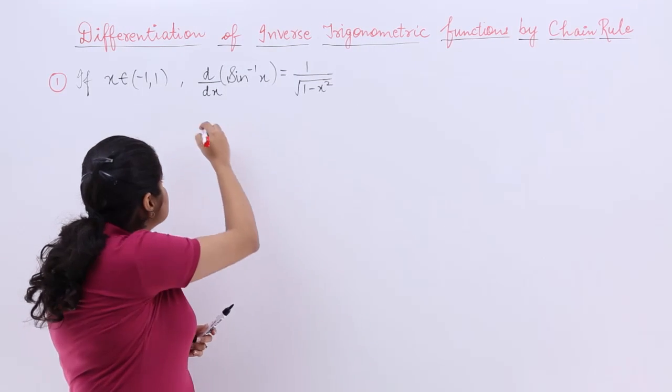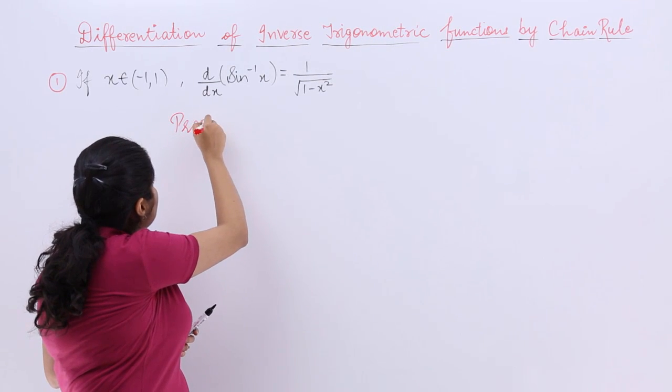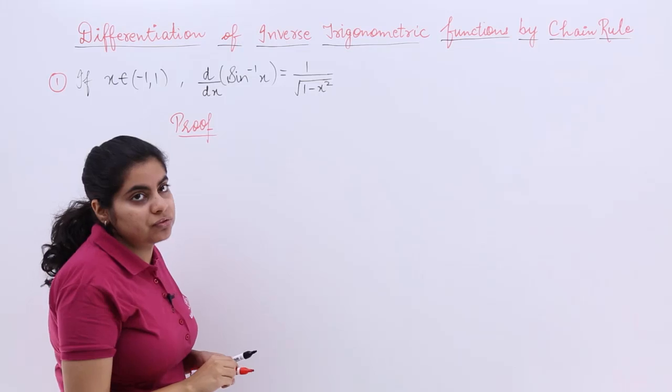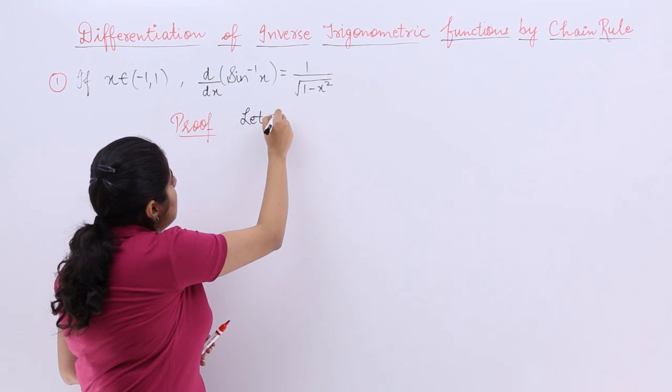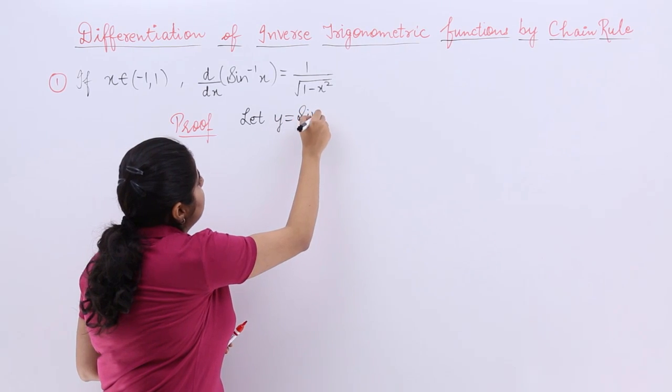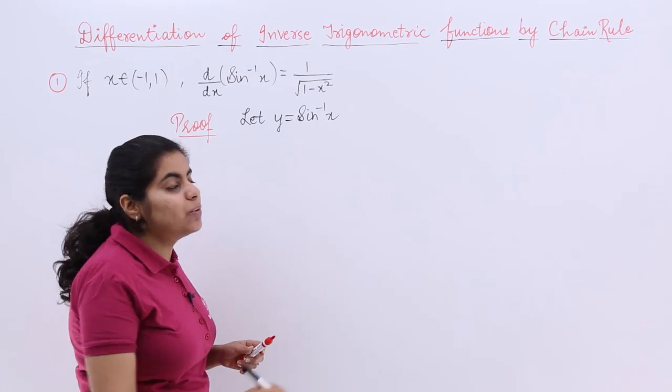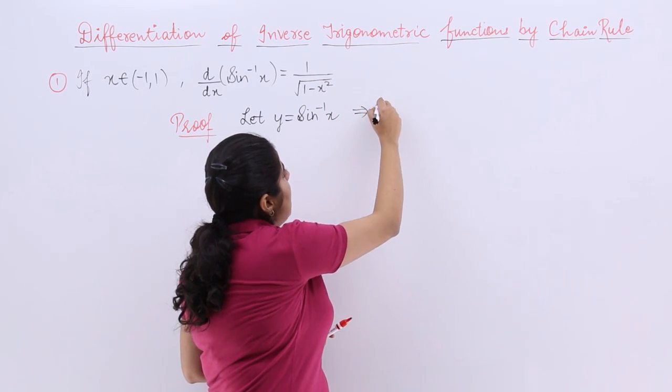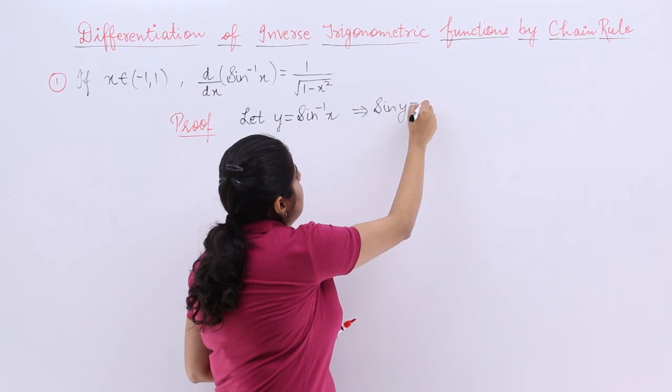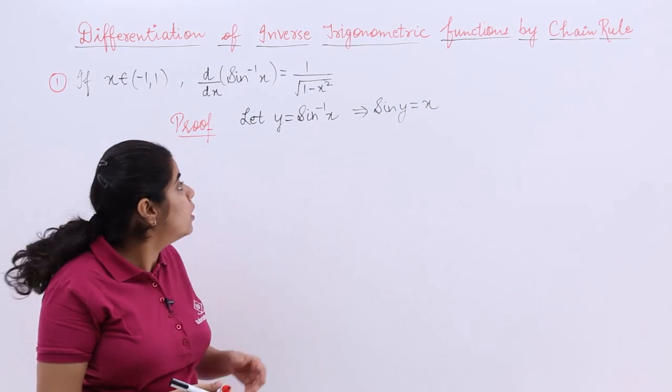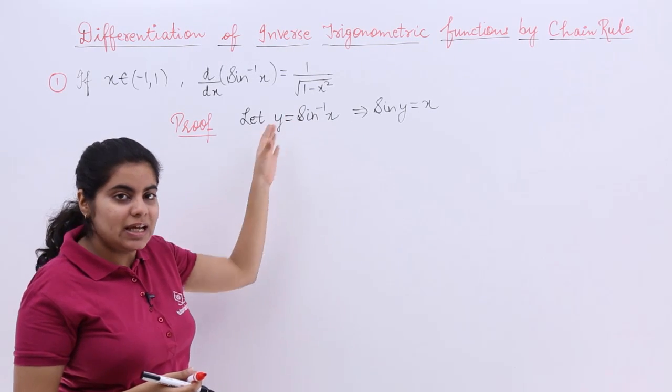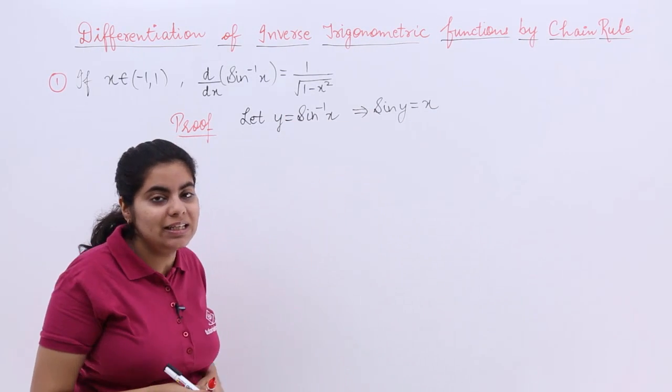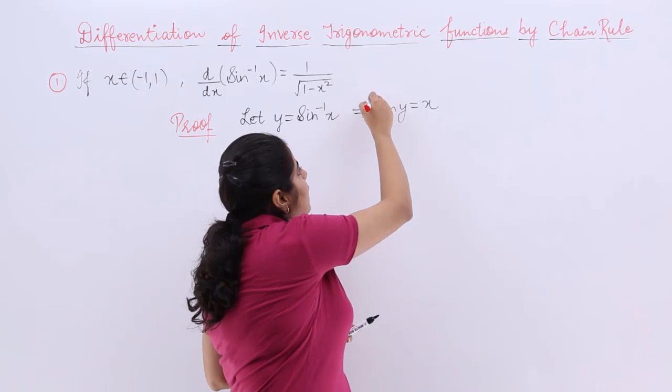I give the heading as proof and we start with the proof of derivative of sine inverse x. Let y equal sine inverse x. If y equals sine inverse x, then sine y equals x. How? Just take sine both sides. So sine y equals sine sine inverse x. Sine and sine inverse cancel, so it is basically x only. This can be put in one box.